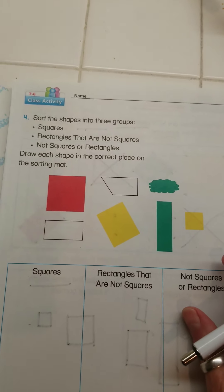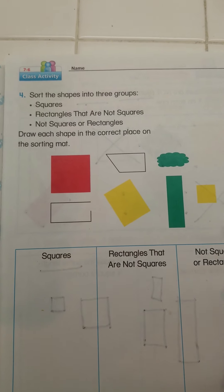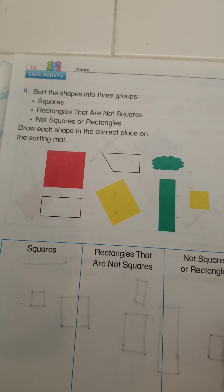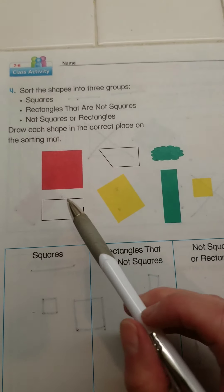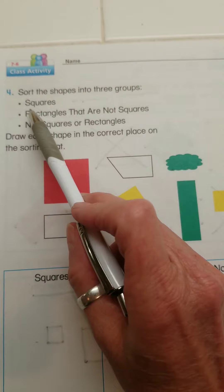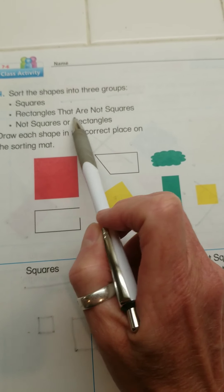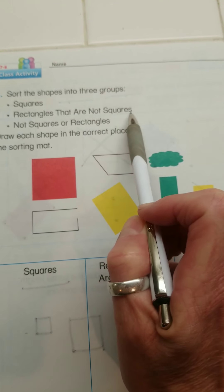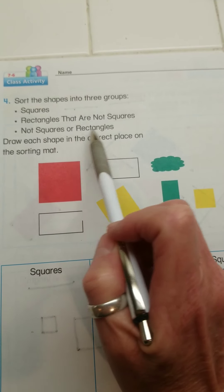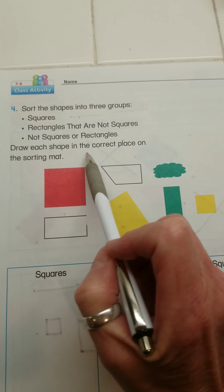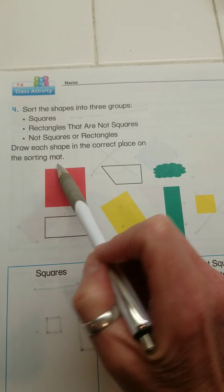Hello. So this is the back side of lesson 7.6. I just assigned 7.6 in Think Central. It says sort the shapes into three groups: squares, rectangles that are not squares, not squares or rectangles, and draw each shape in the correct place on the sorting mat.